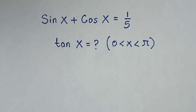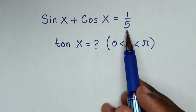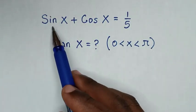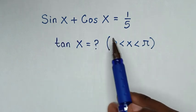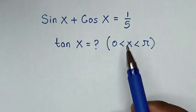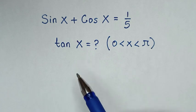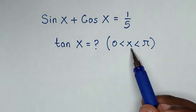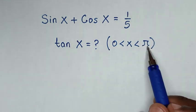Hello, you are welcome. In this video we solve the math problem: sin x plus cos x is equal to 1 over 5. We need to find the value of tan x, given that x is between 0 and pi.